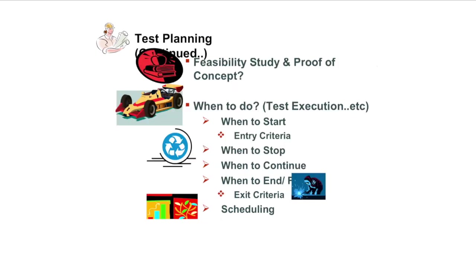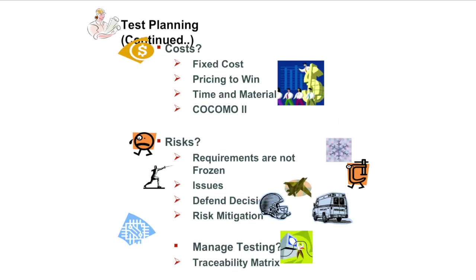Test planning is also involved with feasibility study and proof of concept, where you showcase at a smaller level what you want to achieve is achievable, and then extrapolate it along with your plan. 'When to do it' is the next important component — test execution timing: when to start, what should be the entry criteria, when to stop, exit criteria, and scheduling what testing tasks should be executed at what times.